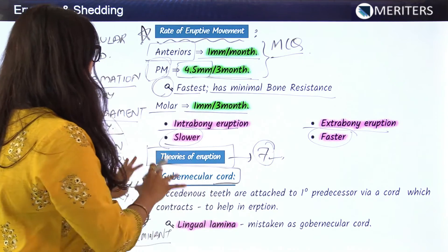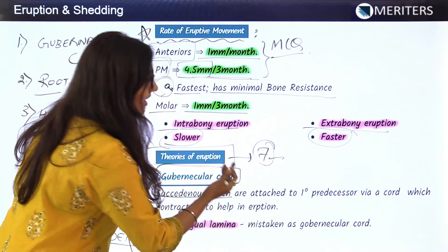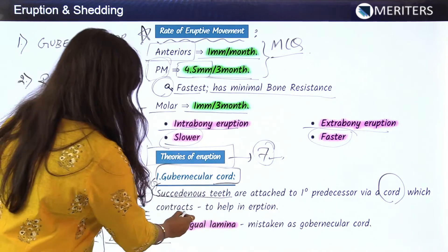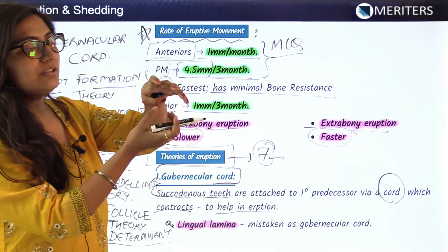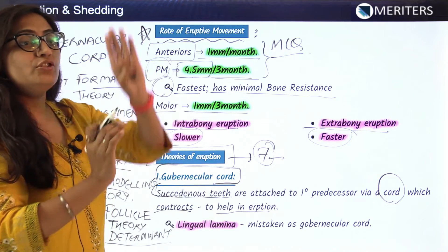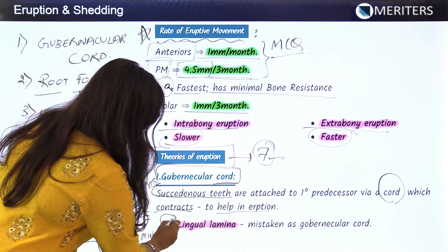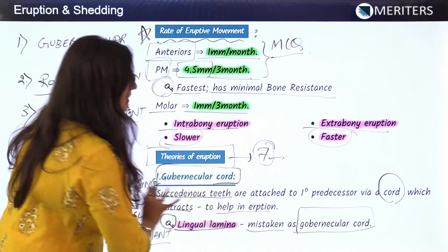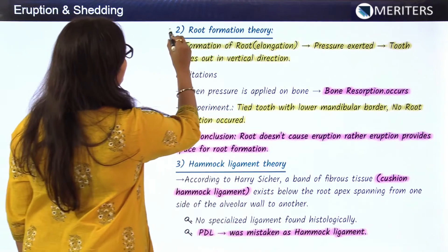According to the gubernacular chord theory, the succedaneous teeth are attached to their primary predecessors via a chord — the gubernacular chord — which contracts to help in eruption. So a primary tooth and its succedaneous tooth are attached through this chord, which contracts and leads to the occlusal movement of the teeth. A key fact to remember is that the lingual lamina is sometimes mistaken for the gubernacular chord in appearance.